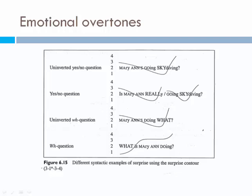Uninverted yes or no question: 'Marianne's going skydiving?' — 'What? You're kidding me. She's crazy. I can't believe she's gonna do it.' Yes or no question: 'Is Marianne really going skydiving? Is it true?' Uninverted WH question: 'Marianne's doing what? Please repeat the information. What did you just say?' WH question: 'What is Marianne doing? Skydiving? No.' All four examples express surprise using different grammar structures, but they all convey surprise.